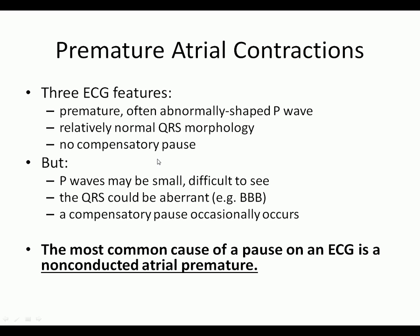When we have premature atrial contractions, the P waves can be present, hidden, or smaller. You could also have an abnormal QRS if you had a bundle branch block, and you could sometimes have a compensatory pause. The most common cause of a pause on the ECG is a non-conducted atrial premature beat — this is really important to know. A premature atrial contraction is the most common reason why you see a pause on an EKG.